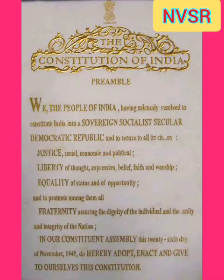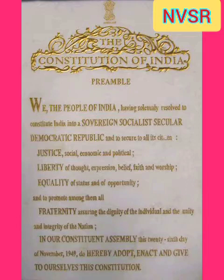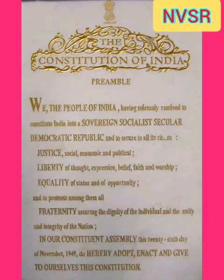Democratic: A democratic polity, as stipulated in the Preamble, is based on the doctrine of popular sovereignty, that is, possession of supreme power by the people. Democracy is of two types: direct and indirect. In direct democracy, the people exercise their supreme power directly, as in the case of Switzerland. There are four devices of direct democracy, namely referendum, initiative, recall and plebiscite.